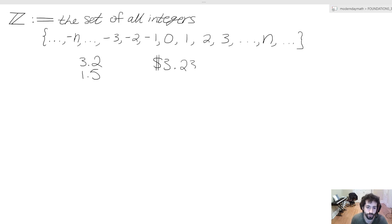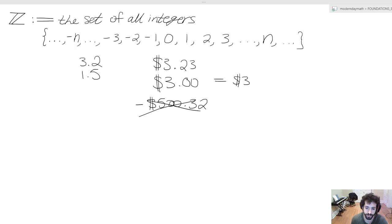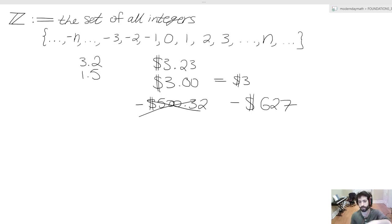If we think about money, something like three dollars and 23 cents would not be in this set. But three dollars — represented as just three — would be in this set. And if we want to talk about debt: negative five hundred and thirty-two dollars would not be in this set, whereas negative six hundred and twenty-seven dollars would be, since it's a whole number. We won't slap a money sign on the set — just trying to convey what will actually be in here: our friends the integers.